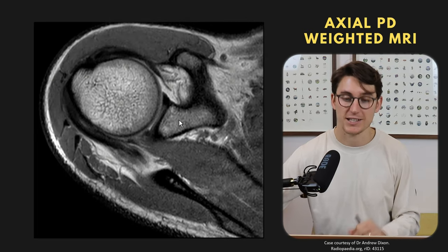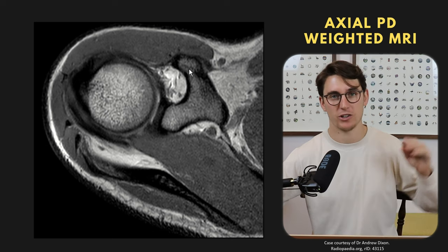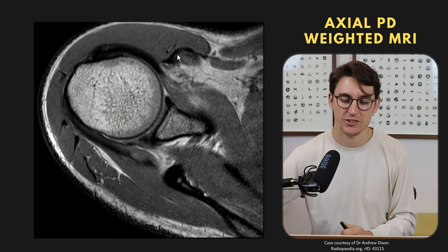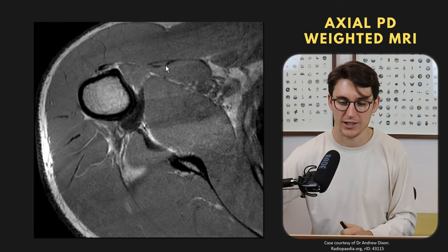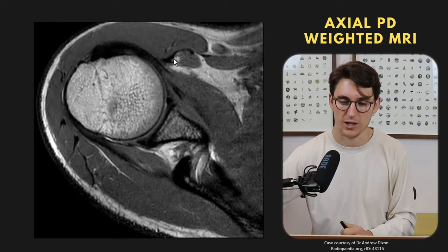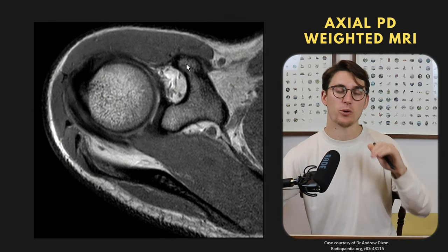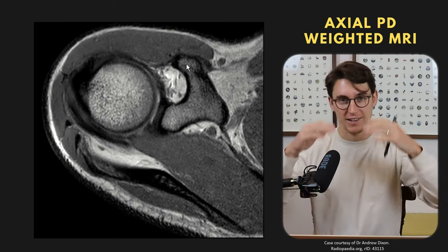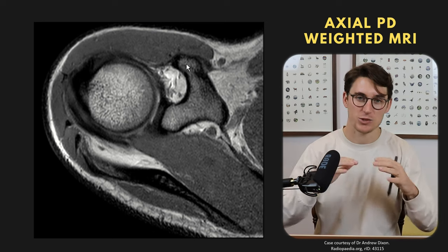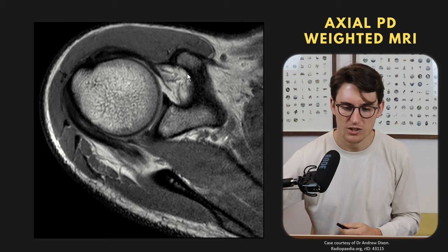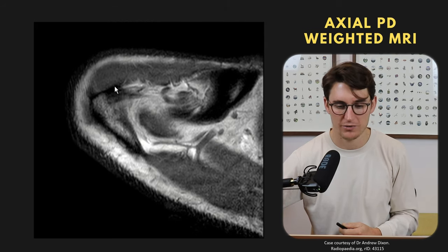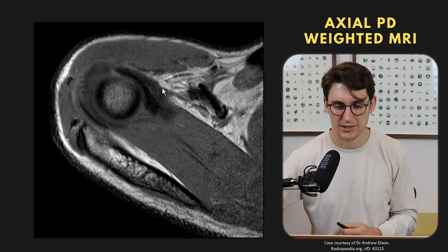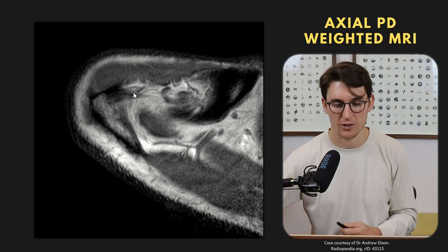Heading superiorly, we can see the coracoid process. We know the short head of biceps and coracobrachialis tendons attach to the anterior portion of the coracoid, and scrolling down we can see those tendons going into the arm. There's a really important coracoacromial ligament that makes the coracoacromial arch, which houses the subacromial subdeltoid bursa and supraspinatus tendon. It's sometimes easier to find this tendon by going up to the acromion first and following it back down to the coracoid.